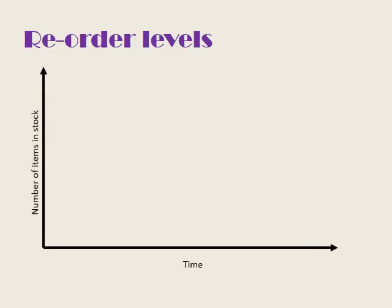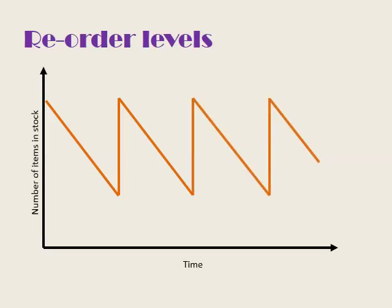Let's illustrate some of these points by having a look at a graph. We've got time running along the bottom of our graph and the number of items in stock shown on the vertical axis. If we had a level of stock, we would expect that level to slowly fall over time as stock is used or sold. Then when we've ordered some stock and it arrives, the level of stock will shoot back up, then fall again, we'll order some more stock, the stock will rise again, and so on.